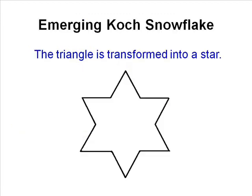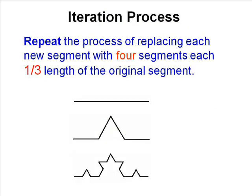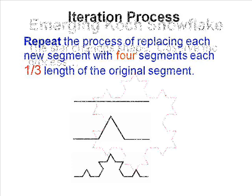The middle part is replaced with two segments of length equal to the removed middle, arranged in triangular form. The fractal process creates self-similar images.